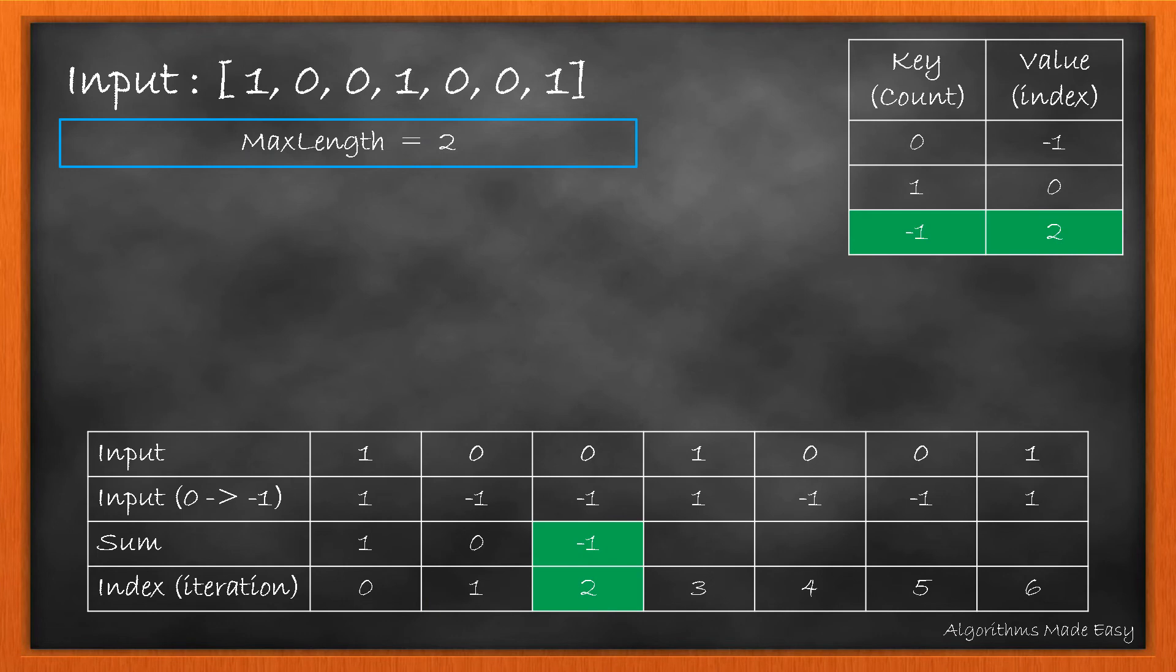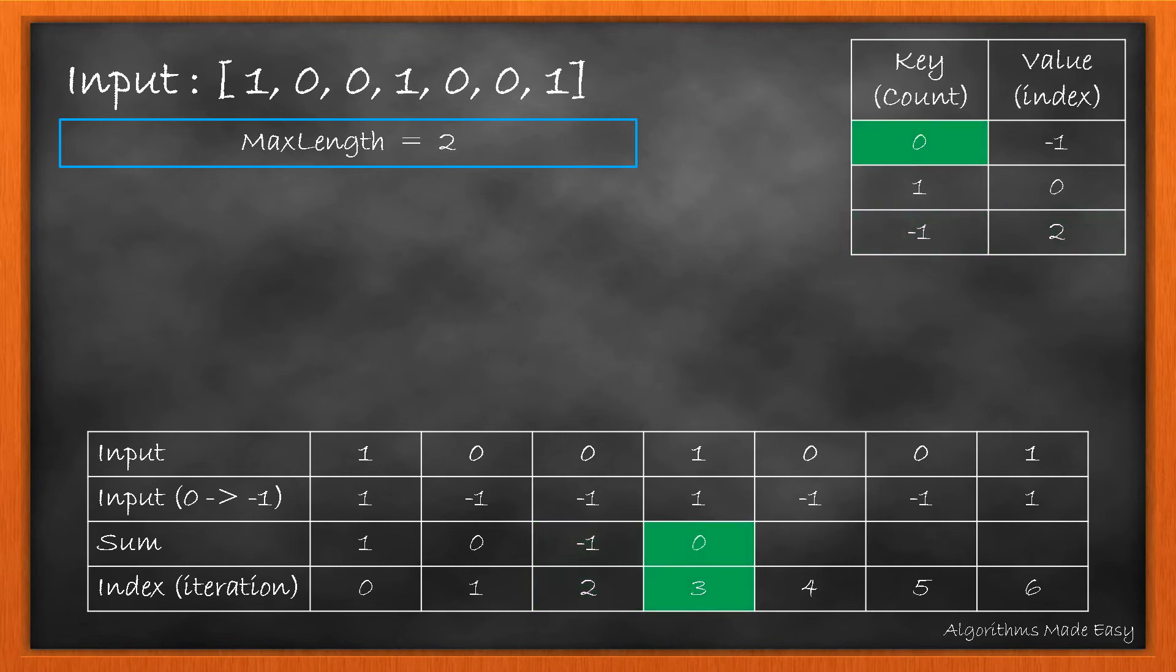Moving ahead, the sum becomes –1. As it is not present, we add it with index 2 as the value.